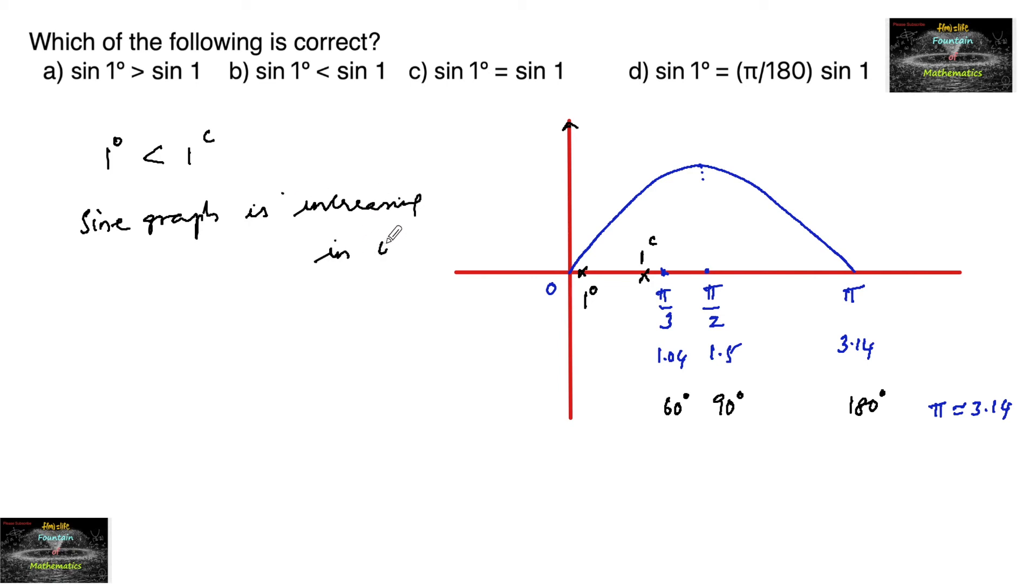In 0 to π/2, we can say the graph is increasing, so sin 1 degree will be less than sin 1 radian. Correspondingly, you can check it out for the 1 degree value—so this is sin 1 degree.